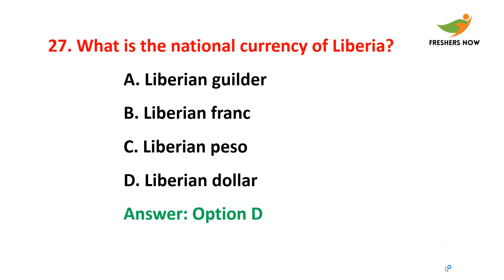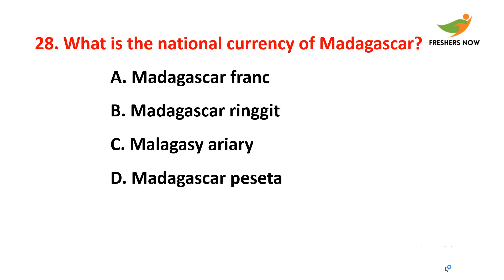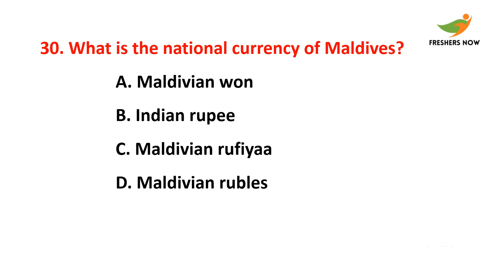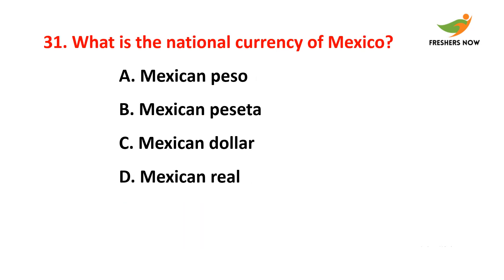Twenty-sixth question: What is the national currency of Kuwait? The answer is option D — Kuwaiti dinar. Twenty-seventh question: What is the national currency of Liberia? The answer is option D — Liberian dollar. Twenty-eighth question: What is the national currency of Madagascar? The answer is option C — Malagasy ariary.